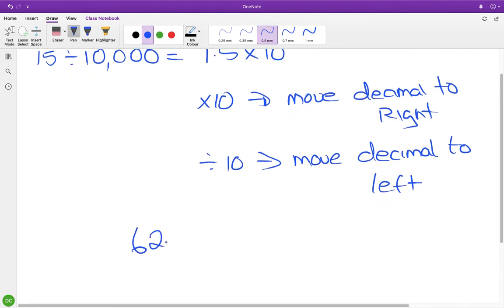If I took a number like 624.298 and wanted to make it ten times bigger, I'd take this decimal point here and move it here, so it would become 6242.98. That's ten times bigger.